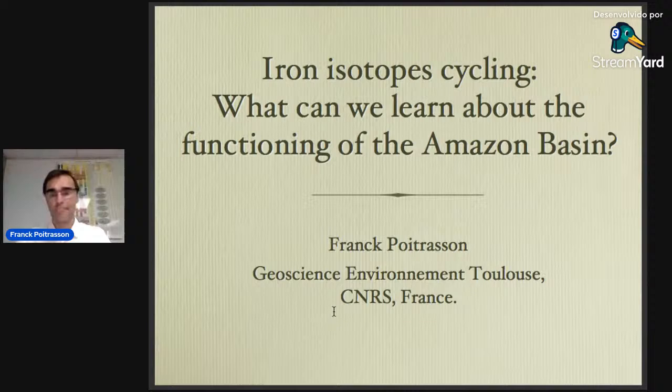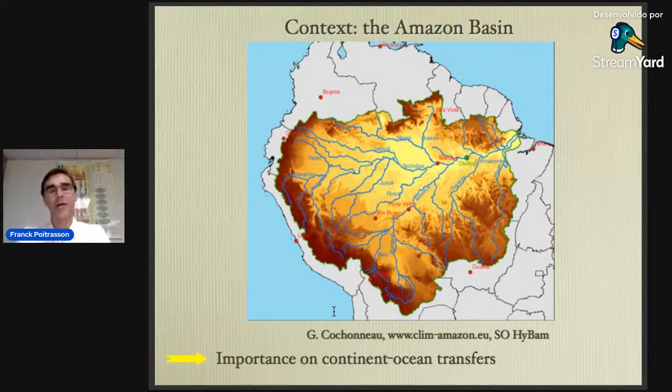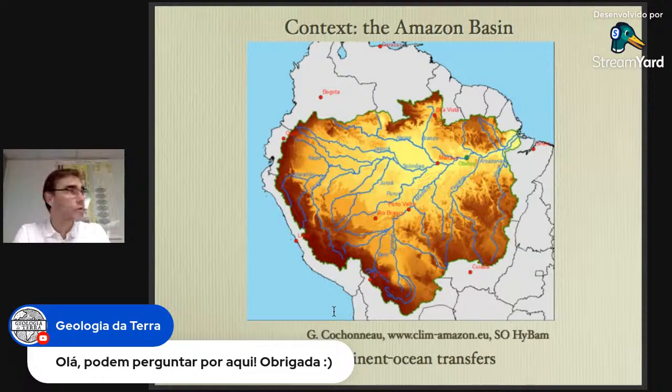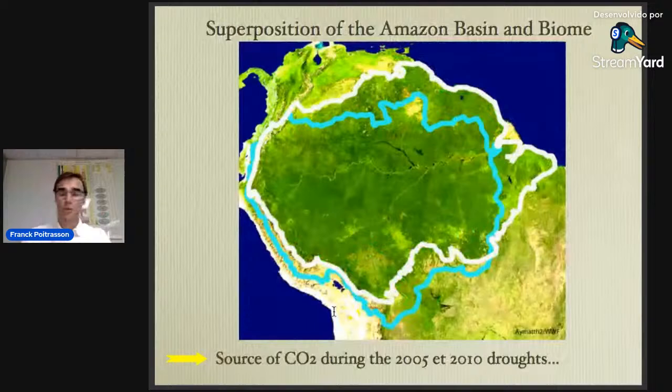So what about the context first? This is the Amazon Basin — I won't teach Brazilians what the Amazon Basin is. You know how big it is and how important it is for the world. This is the biggest basin in the world. If you are concerned about freshwater transfer by rivers or suspended matter transfer to the oceans, it represents about 17 to 18 percent of the global total. Nothing else matches it elsewhere in the world.